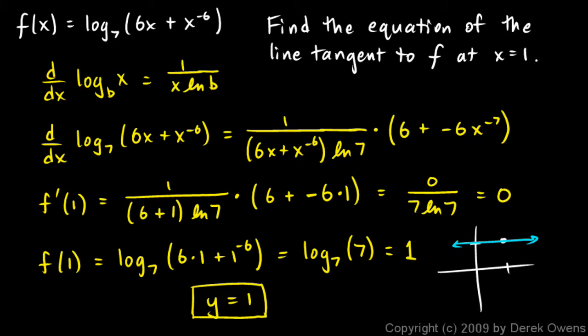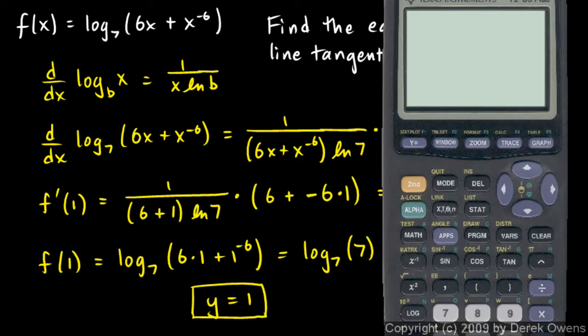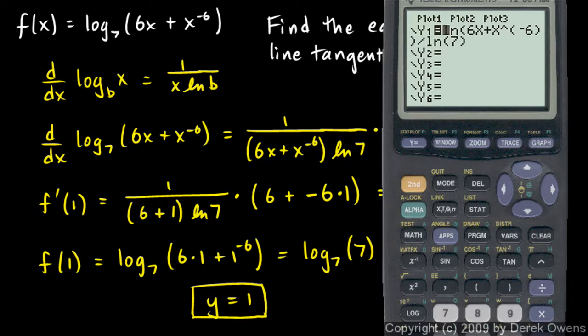We can see this on the graphing calculator also. Let's graph this function. I'm going to turn this on, and I've entered the function here. Now the calculator will do natural logs, and it will do base 10 logs, but it won't do base 7 logs. But we can use the change of base formula.